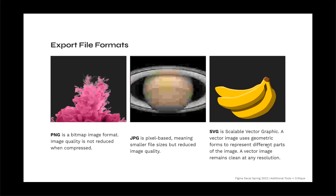Here are some images that represent these formats. As you can see, JPEG is pixel-based, so if it's originally a smaller format and you enlarge it, it can start to look really pixelated and boxy.